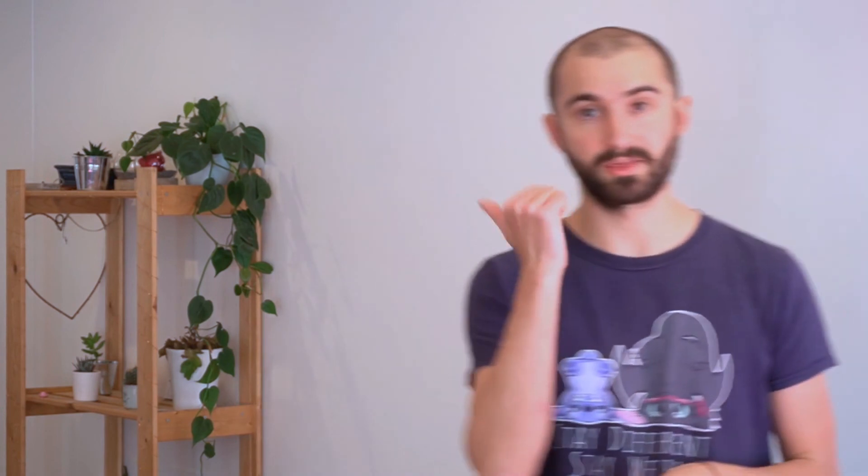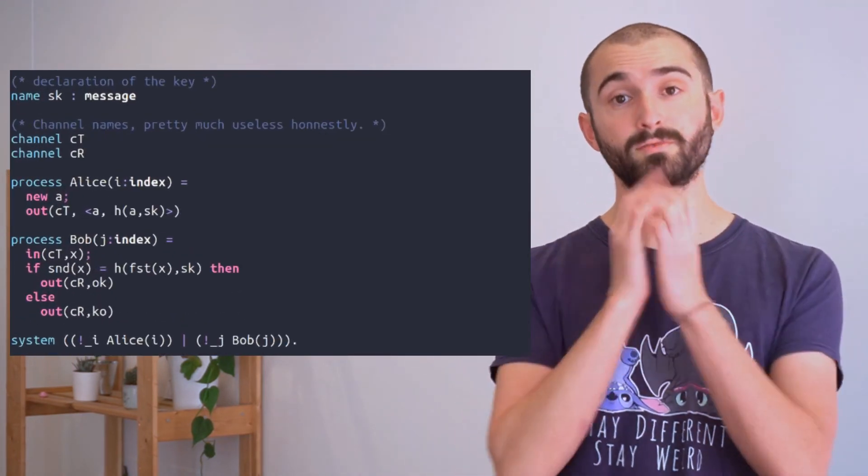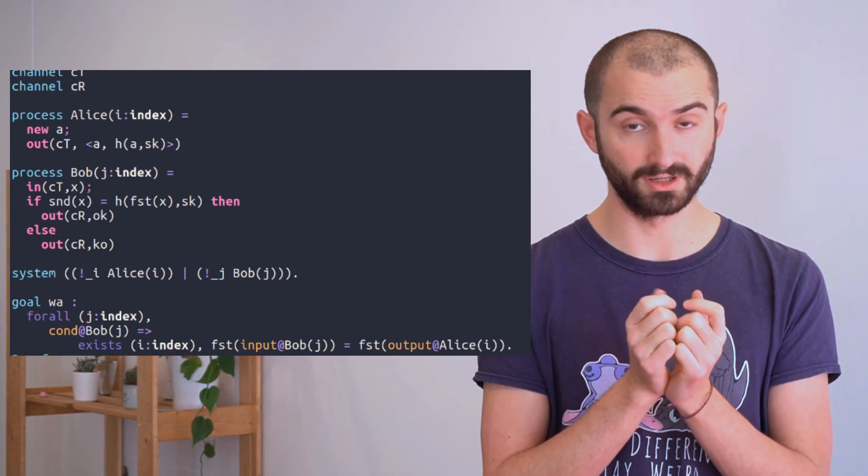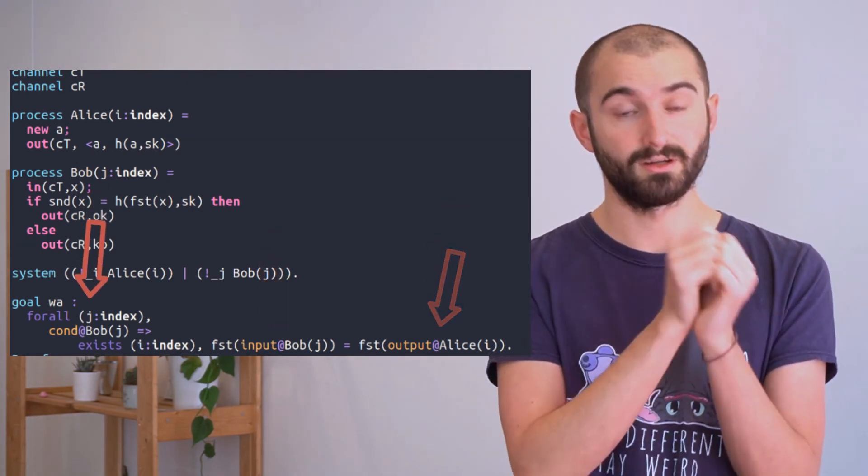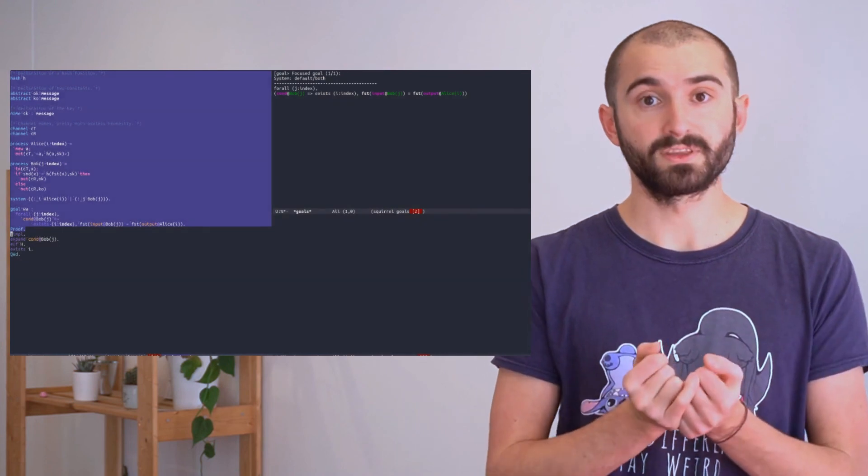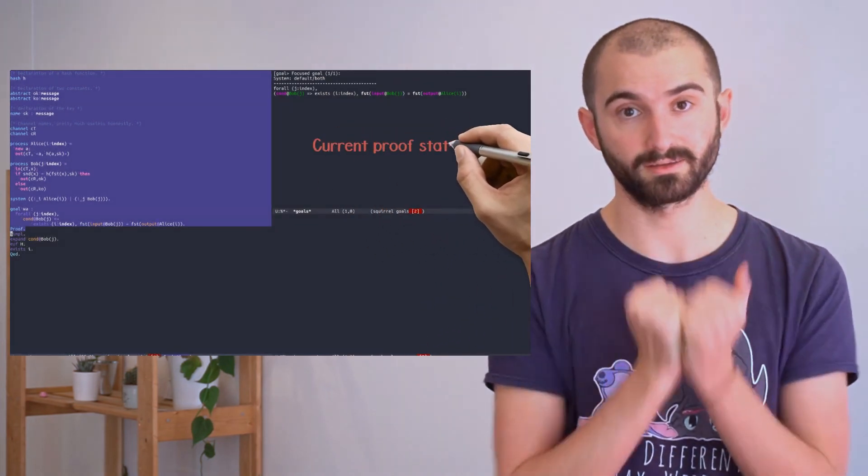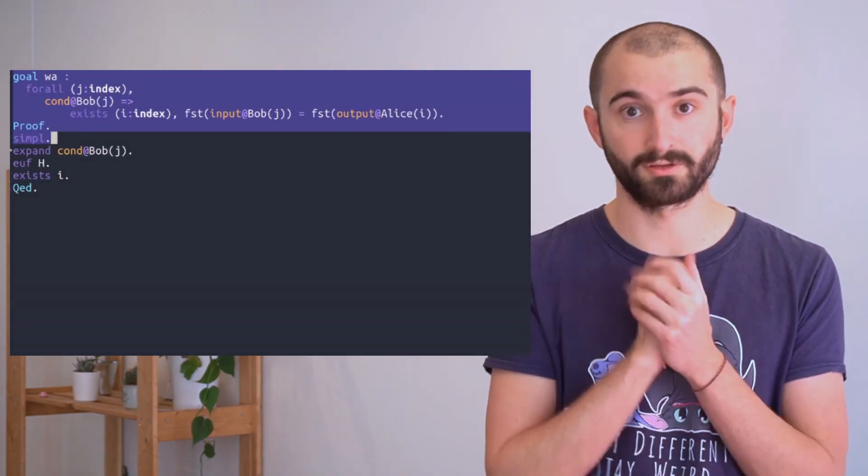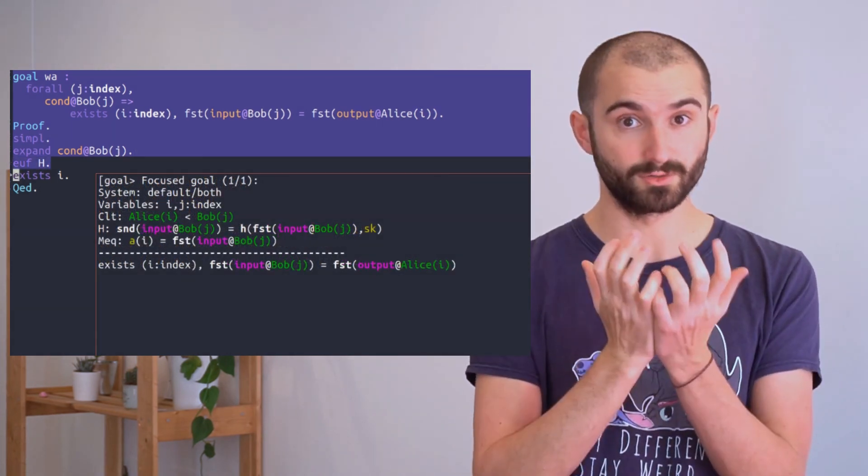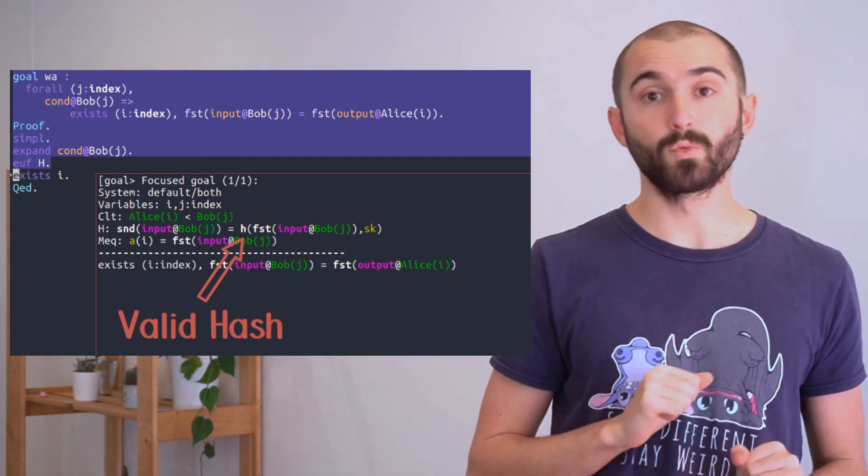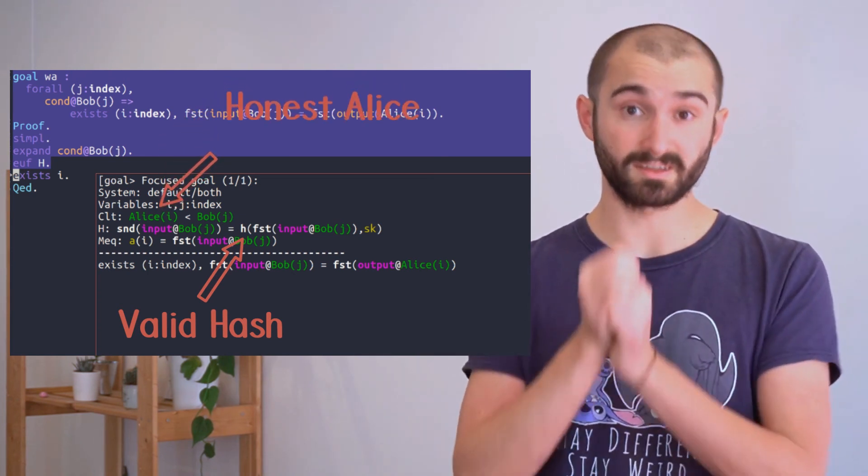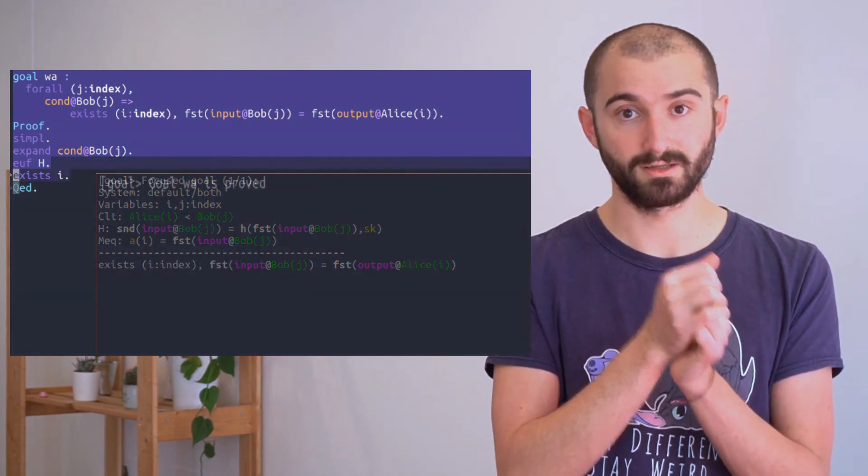The Squirrel prover, it looks like this. That's my Alice-and-Bob protocol, so what does the meta-logic formula look like? Essentially, we have inside the logic what we call macros that can refer to the input, the output, or the condition of an action happening somewhere in the trace. And we can show on our example that if the condition of Bob succeeds, it actually received a value sent by Alice. Squirrel supports classical first-order reasoning rules, but also cryptographic rules, like EUF, a nickname for existential unforgeability, that actually matches our intuition. If we have a valid hash, we know that it was honestly produced previously. As only Alice can produce such hashes, it means that there exists an honest session of Alice that produced this message. And we conclude.